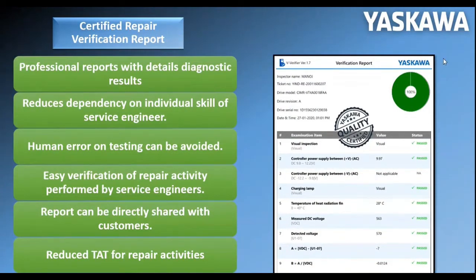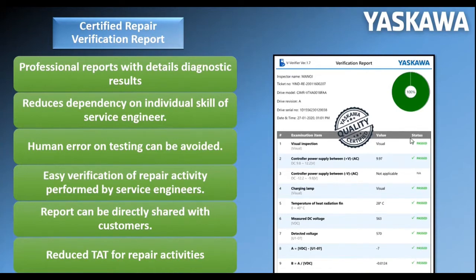After the test, the application will provide detailed reports. If everything has passed, it will show 100% test cases passed and a quality symbol will appear. Individual test results can also be seen in the detailed reports. If some tests are failing, it will show, for example, 99% or 98% passed and 2% failed, and which 2% failed can be seen from the report — instead of pass, it will display fail.